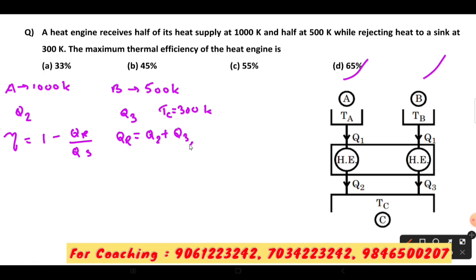And QS is equal to Q1. Looking at the equation, p is equal to 1 minus QR by QS. QR by QS is equal to TL divided by TH, which we are talking about in the theory section.